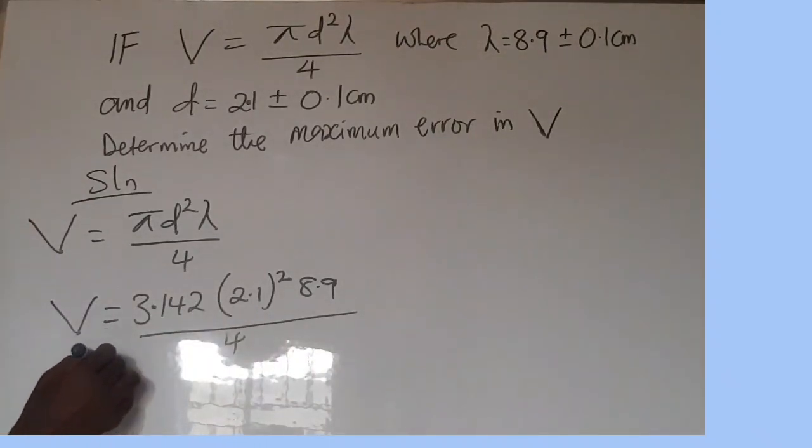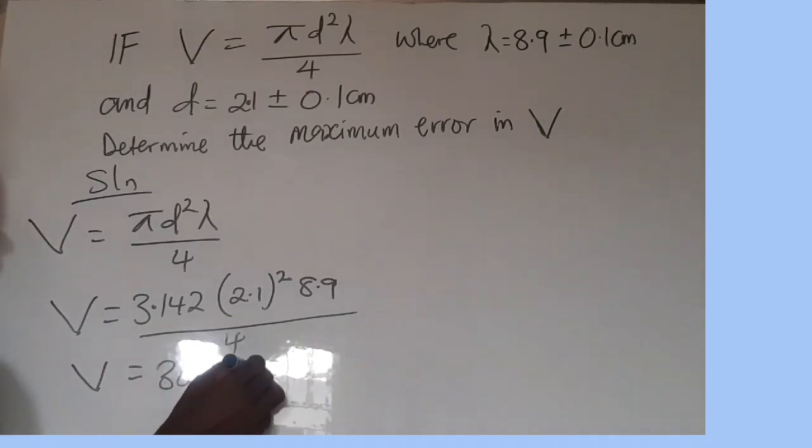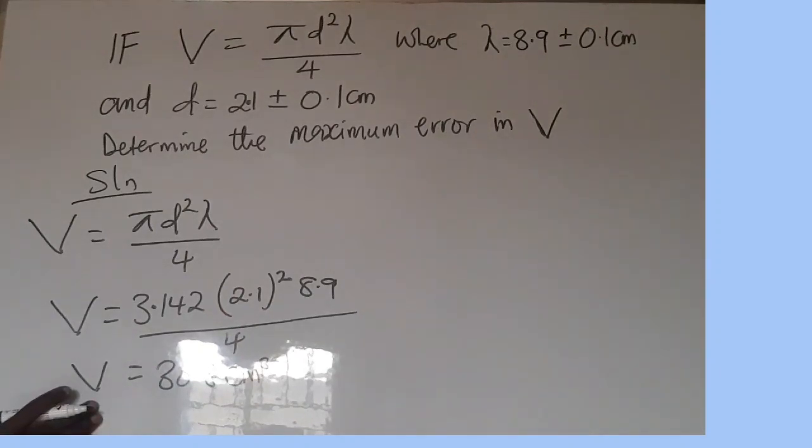All over 4. If we evaluate this, our V is going to be 30.8. This is cm³, approximately.